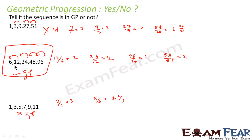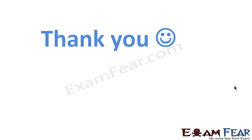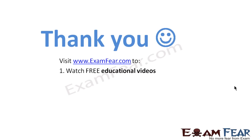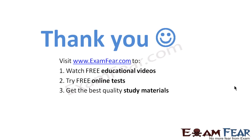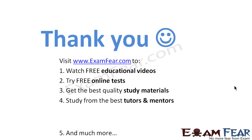To find whether a sequence is a GP, we have to find all the ratios and check that the ratio is constant. If the ratio is constant it is a GP; otherwise it is not. Visit examfear.com to watch free educational videos, try free online tests, get the best quality study materials, and study from the best tutors and mentors. Thanks.